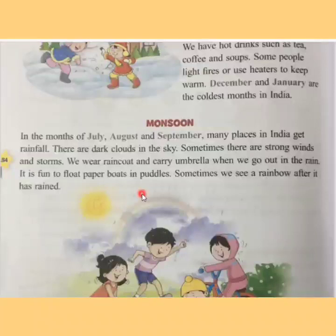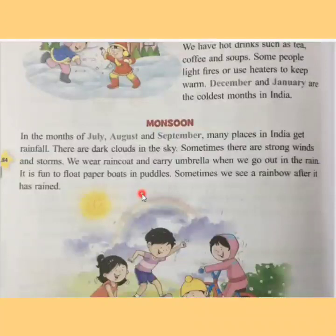The colors in a rainbow are violet, indigo, blue, green, yellow, orange, and red. Also, whenever it rains, we like to eat hot hot pakoras along with tea. We love to eat them.